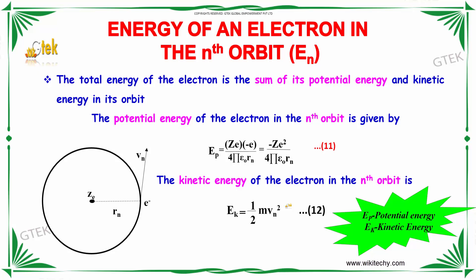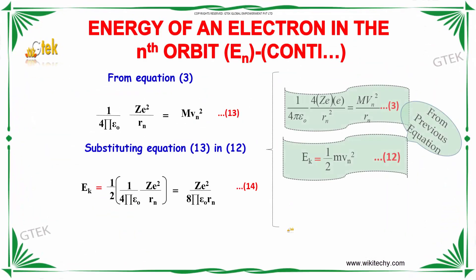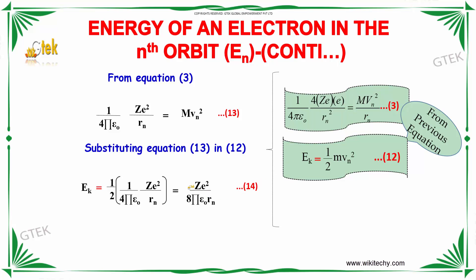The kinetic energy of the electron in the nth orbit is equal to half mVn². From equation 3, (1/4πε₀)·(Ze²/Rn²) = mVn²/Rn. Substituting equation 13 into 12, we get Ek = half·mVn², where mVn = (1/4πε₀)·(ZE/Rn), giving kinetic energy equal to ZE² / (8πε₀·Rn).